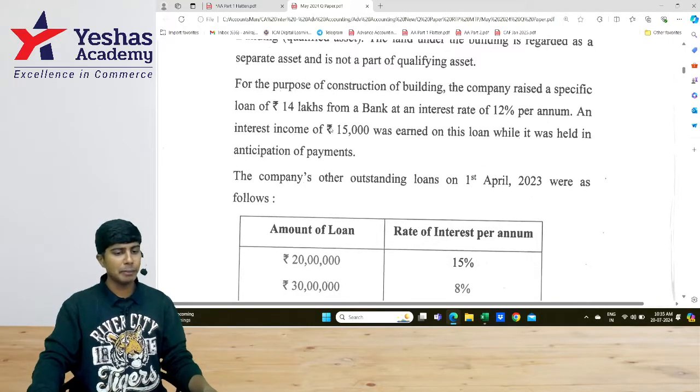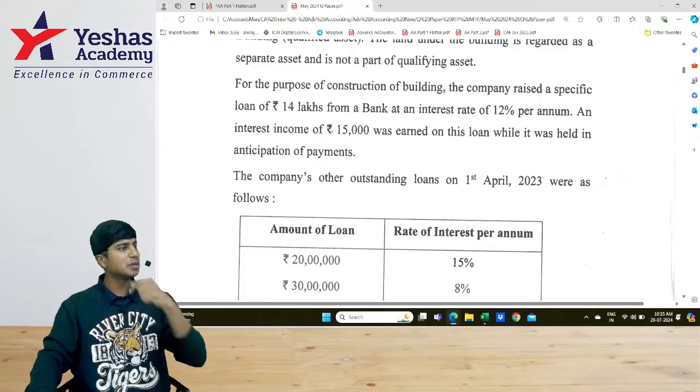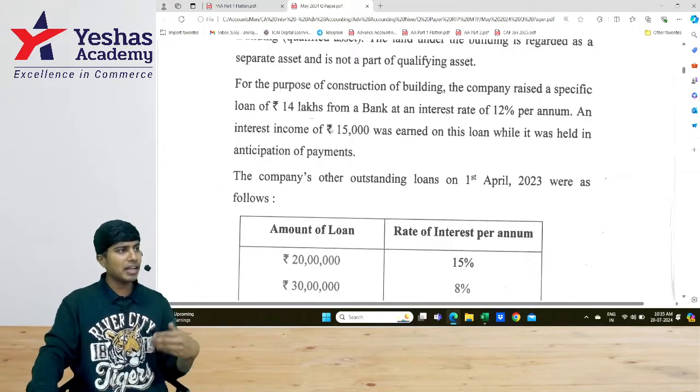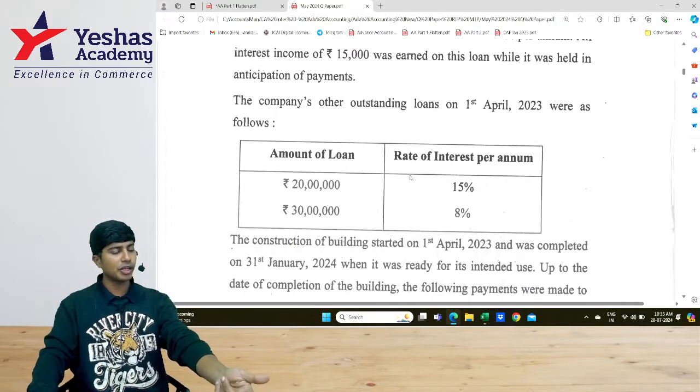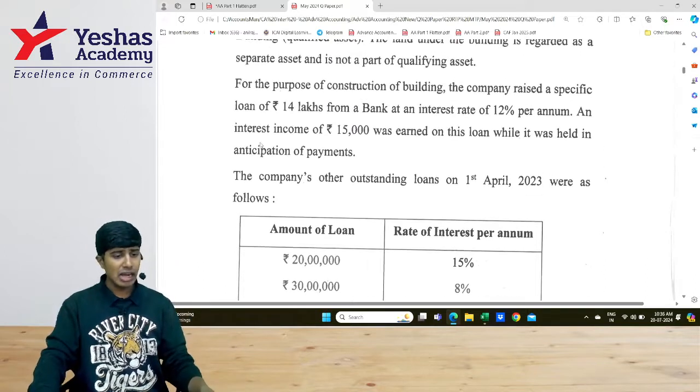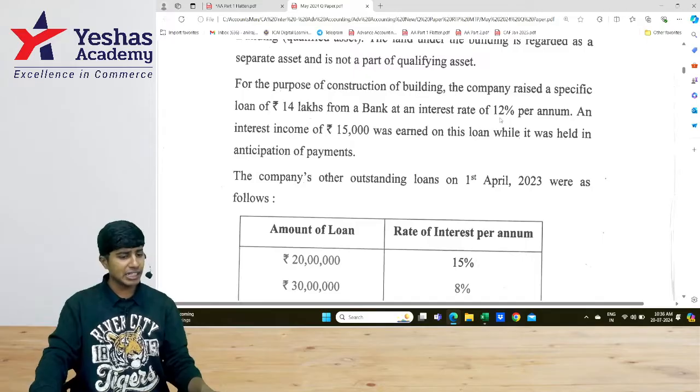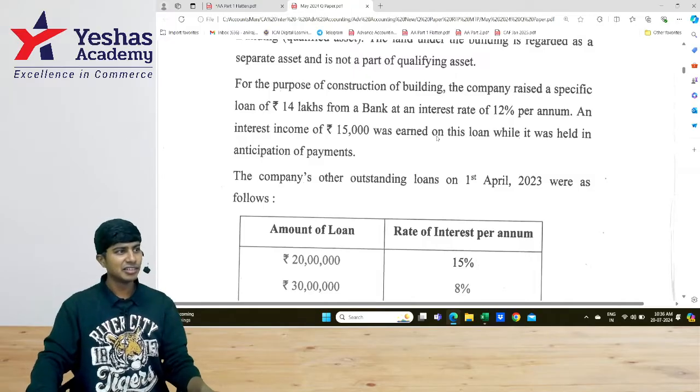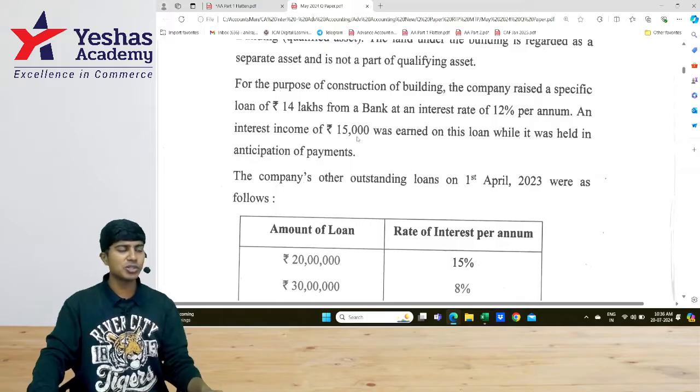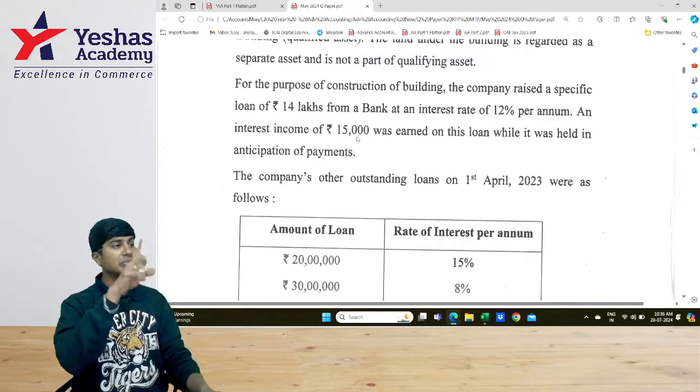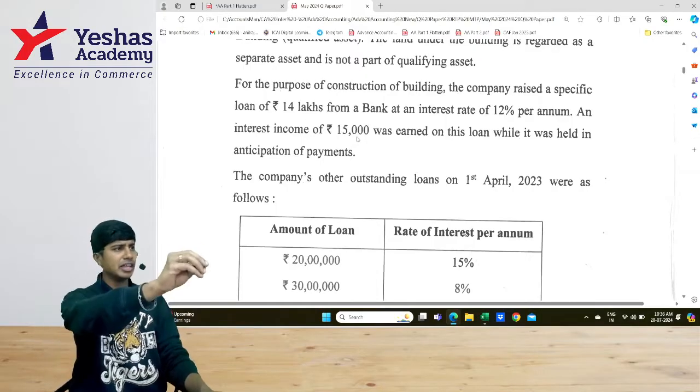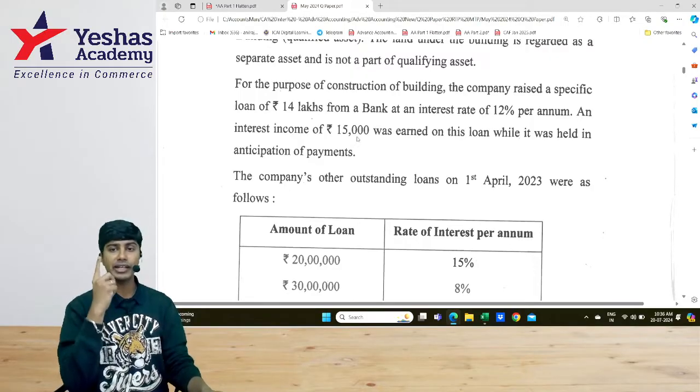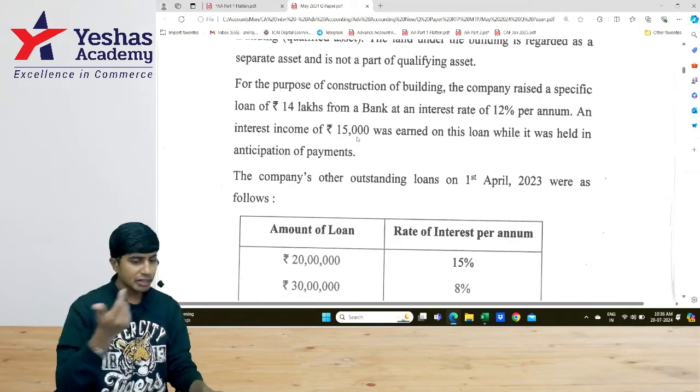For the purpose of construction company raised a specific loan of ₹14 lakhs from the borrowings. First we will take specific loan out at specific rate of interest. Only for the balance will apply general borrowings. If there is more than one general borrowing, see here there are two general borrowings, we are going to find the weighted average cost of the rate and then apply. After that they have told that you have taken specific loan of ₹14 lakhs at 12 percent, and for a period during which this money was not utilized and kept idly in the bank, it has given you ₹15,000 rupees interest. So what do you do with this ₹15,000? You deduct it from the total borrowing cost to be capitalized, just before adding it to the asset.